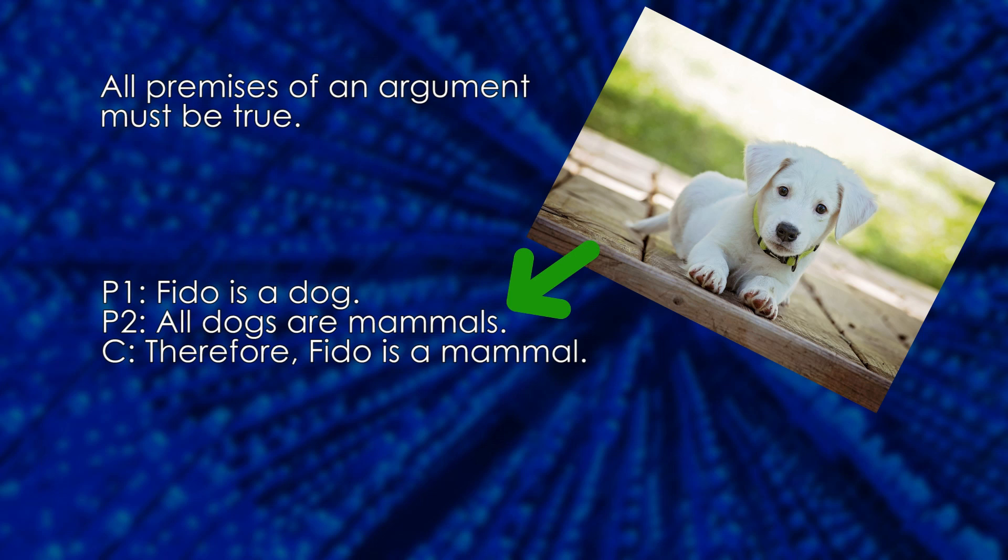We can start with premise 2. Yes, that's true by the definitions of the words dog and mammal. Is it true that Fido is a dog? Well, maybe, maybe not. But if all parties can agree that the name Fido in this context refers to a particular individual creature that just happens to be a dog, then yes, premise 1 is also true.